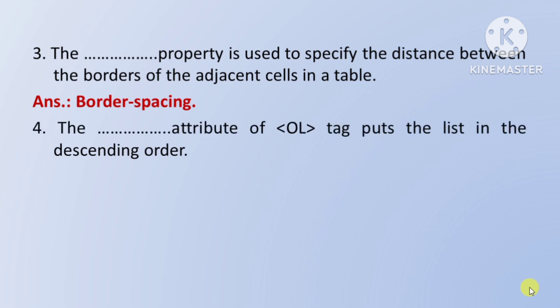Next question: the attribute of the ol tag that puts the list in descending order — ol tag ka woh kaun sa attribute hai jo list ko descending order mein rakh deta hai. So this answer hai: reversed.